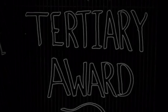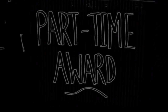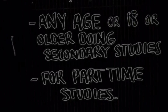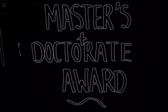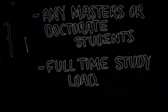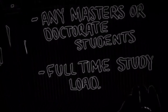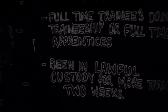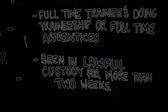The Tertiary Award covers full-time tertiary students or apprentices. The Part-time Award covers students at any age, or those 18 years or older doing secondary studies part-time. The Master's and Doctorates Award covers students doing any Master's or Doctorate degree on a full-time study load. The Student or Australian Apprentice in Lawful Custody Award covers full-time trainees or apprentices who have been in lawful custody for more than two weeks. The final category is testing and assessment.